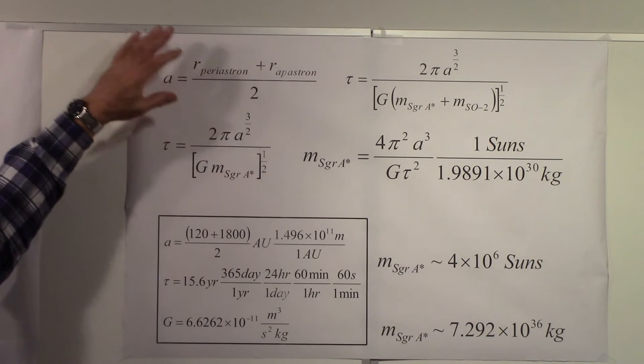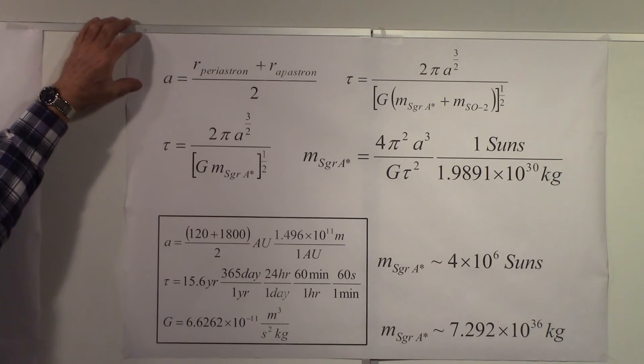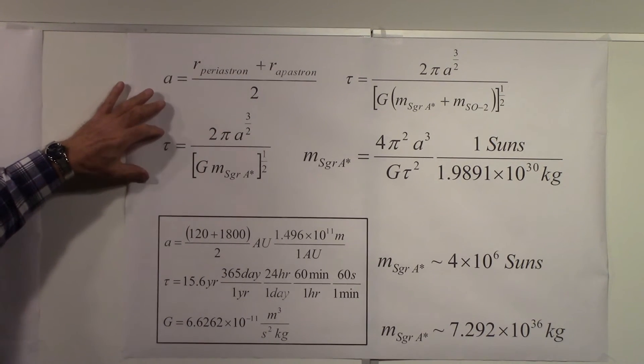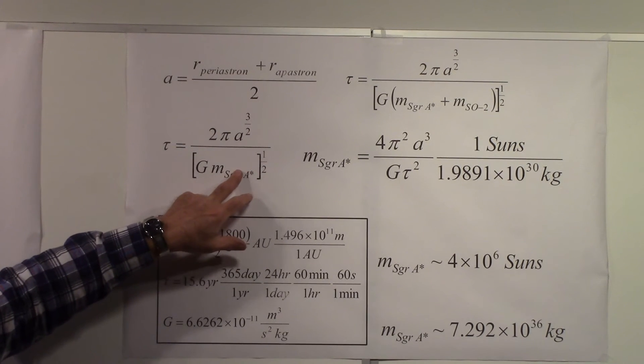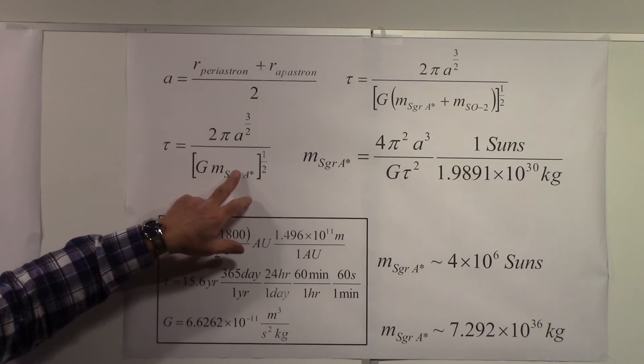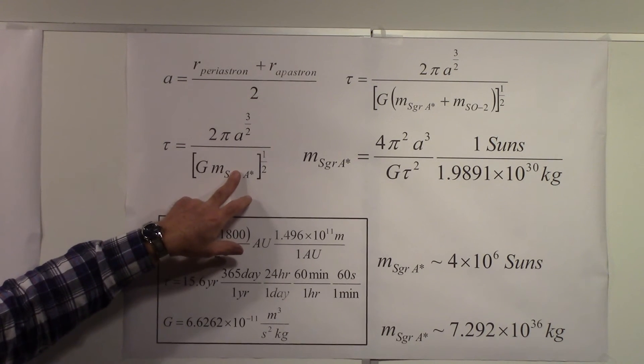Since the mass of Sagittarius A* is so much larger, we can ignore the mass of S02. We'll write the period being equal to this expression, so the only difference is the mass for S02 is not included here.